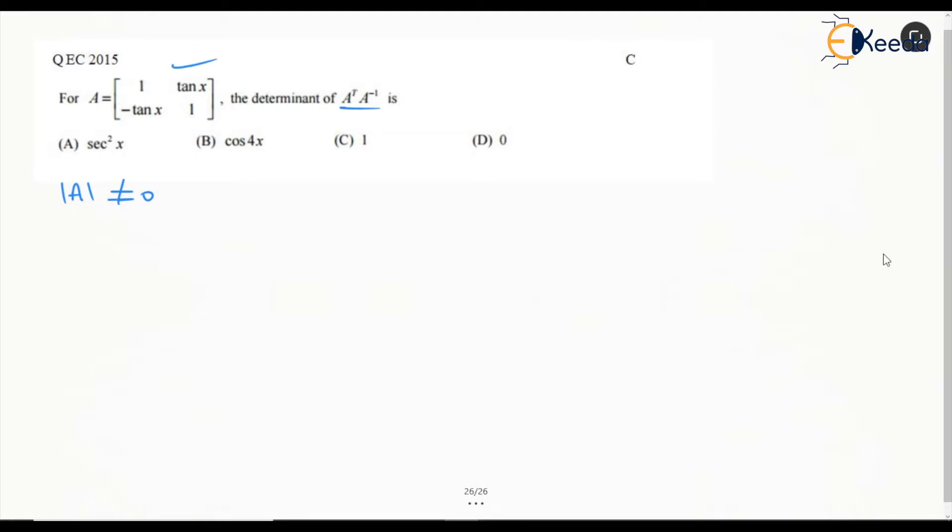So that means this A is possibly going to be invertible and in that case we also know that determinant of A is same as determinant of A transpose. And we have also read that determinant of A inverse is 1 by determinant of A.